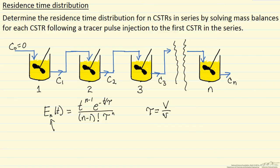where tau is the volume of a given reactor, where the volume of each reactor is the same, divided by the volumetric flow rate.